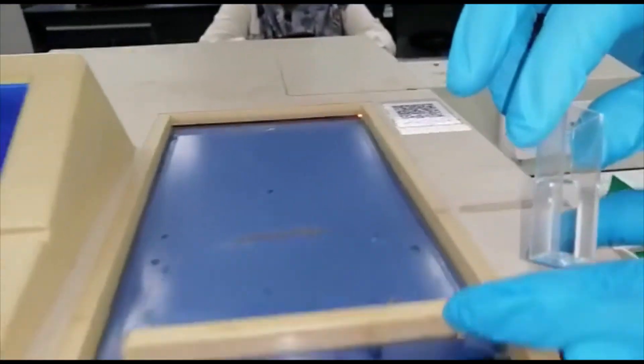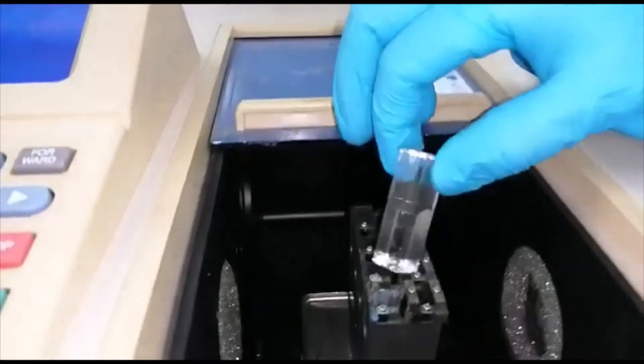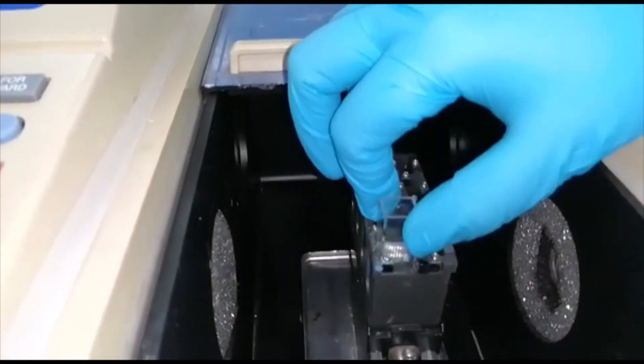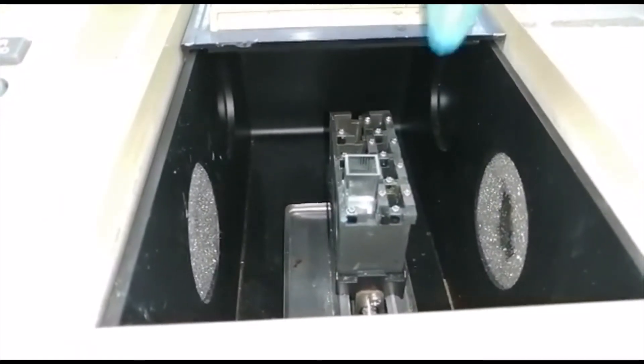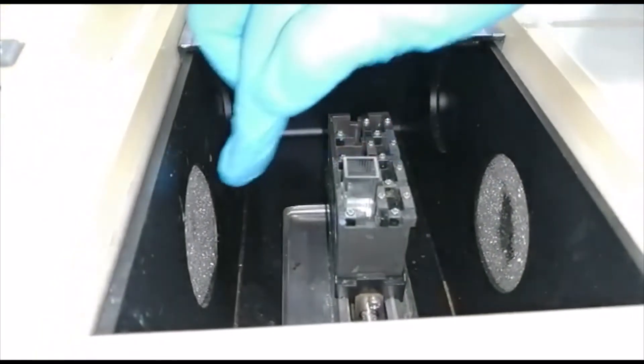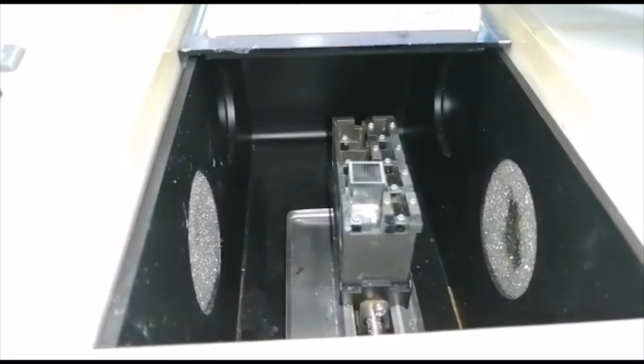Masukkan kuvet ke dalam chamber. Pastikan permukaan optik berada di sisi. Cahaya spektrum akan melalui bahagian sisi kuvet dan terus ke parameter. Tutup.